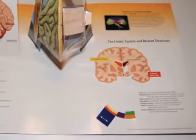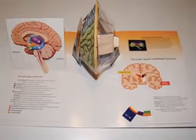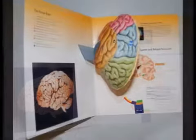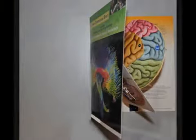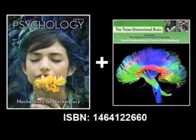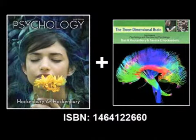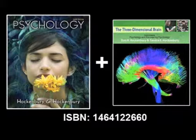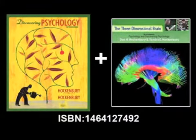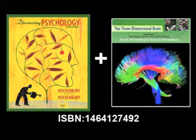You can receive a copy of the three-dimensional model brain upon request, or contact your local Worth representative for an in-person demo. To order the three-dimensional model brain with Hockenberry and Hockenberry Psychology 6E for your students, use this ISBN. To order it with Hockenberry and Hockenberry Discovering Psychology 5E, use this ISBN.